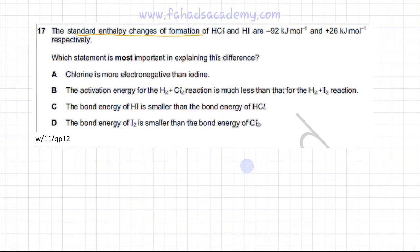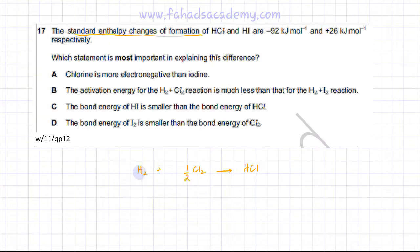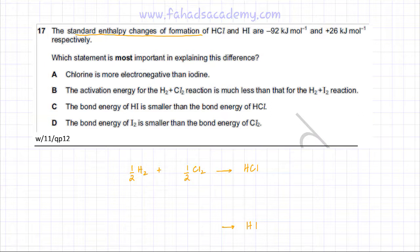The standard enthalpy change of formation of HCl is when one mole of HCl is formed from its constituent elements — hydrogen and chlorine — using half a mole of Cl2 and half a mole of H2, according to a balanced reaction. Similarly, for HI, one mole of HI is formed from half a mole of I2 and half a mole of H2.